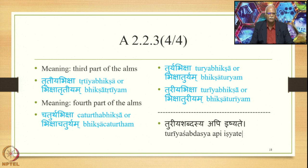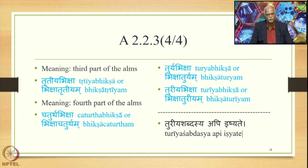Similarly, for 'third part of the arms' we get Trithiyya Bhikshya or Bhikshya Trithiyam; for 'fourth part of the arms' we get Chaturtha Bhikshya or Bhikshya Chaturtha. We also get Turiyya Bhikshya and Bhikshya Turiya. Even though Turiya is not mentioned explicitly in the Sutra, the statement 'Turiya Shabdasya Api Ishyate' adds it to this list.